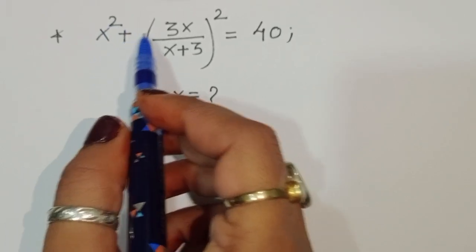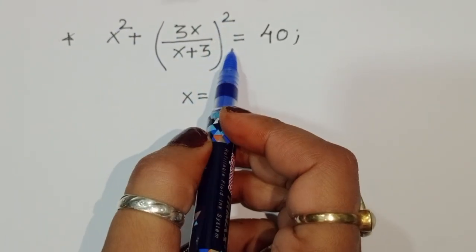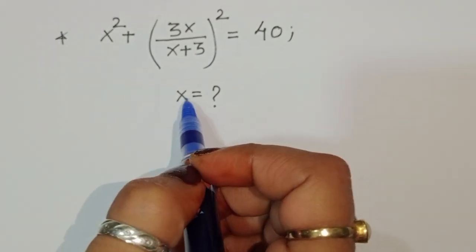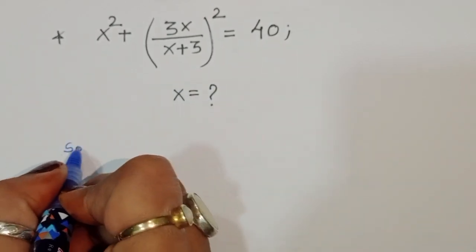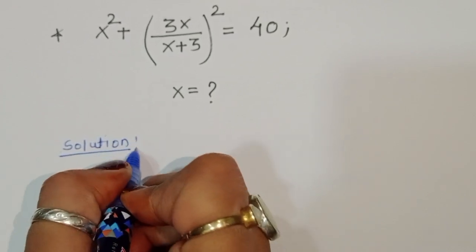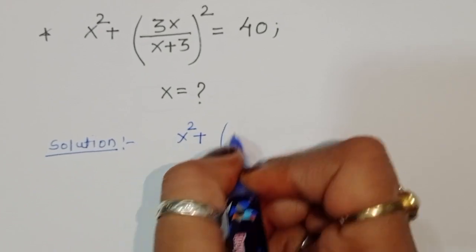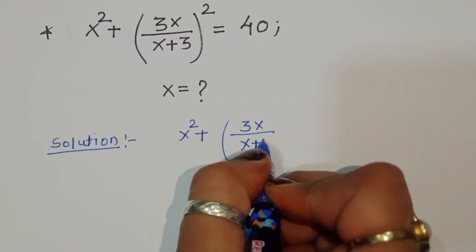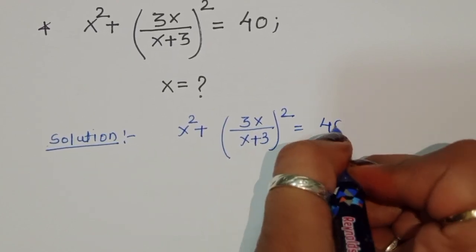We are given (x² + 3x)/(x+3))² = 40. We have to find the value of x. Let's see the solution.